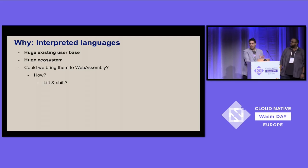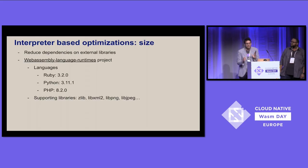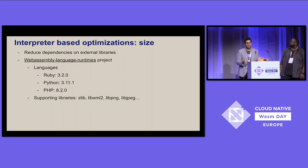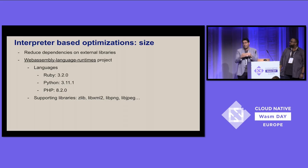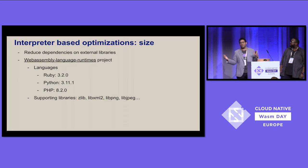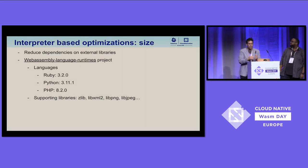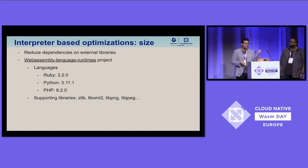The target for interpreted languages is a little bit different. In this talk, we are focusing on size — we are trying to make our interpreters smaller. The reason is that when you move to the edge or closer to the edge, it's a more constrained environment, smaller in terms of what it can compute. So we want things to be smaller and start up faster.